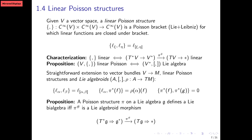Going back to Lie Bi-algebras: a Poisson structure on a Lie algebroid defines a Lie Bi-algebra if and only if the bi-vector is a Lie algebroid morphism. I find it very interesting that the exact compatibility between the two Lie algebra structures can be seen as saying that this Poisson bi-vector is a Lie algebroid morphism between Lie algebroids over different bases — the second one is just a Lie algebroid, the first one is an incarnation of the coadjoint representation.